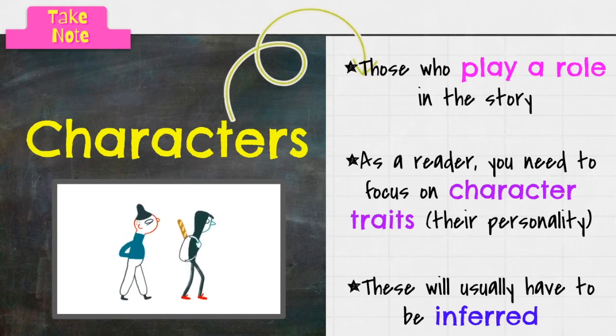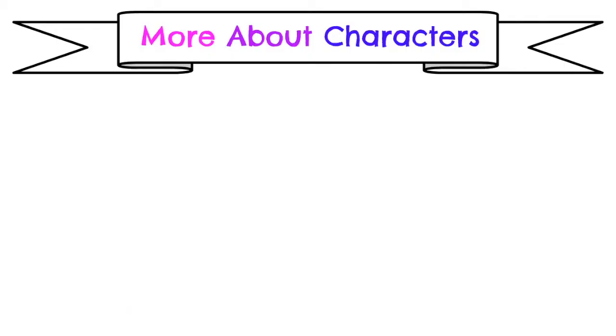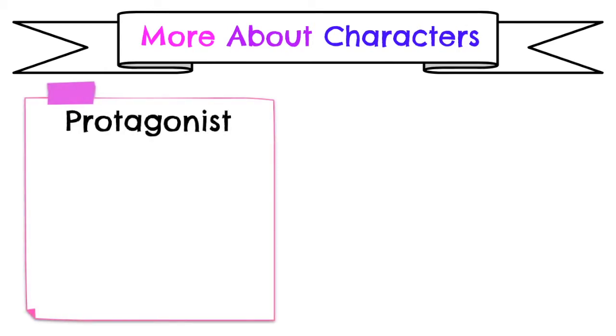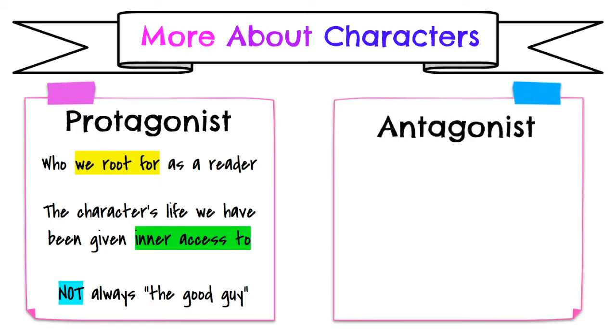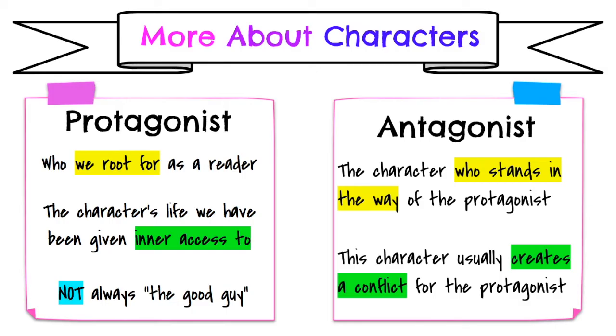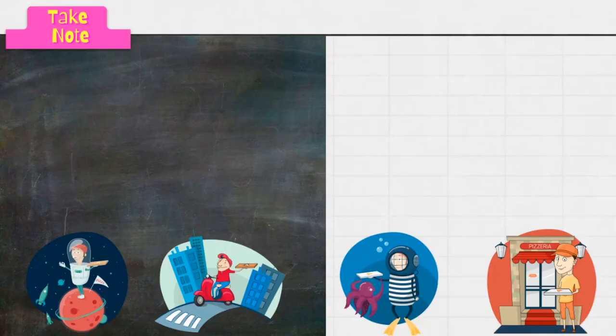All right, more about characters. We have protagonist, who is typically who we root for as a reader, and it's the character's life we're given access to. But be careful, it's not always what we call the good guy. On the other hand, the flip side, we have an antagonist. An antagonist is a character who stands in the way of the protagonist, and this character usually creates a conflict for the protagonist, and we're gonna talk about conflict a little bit later.